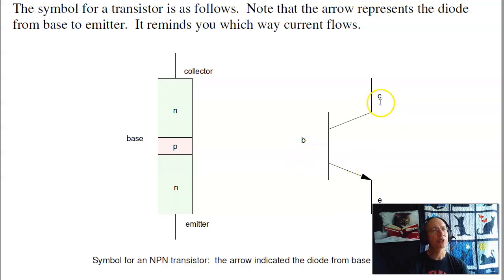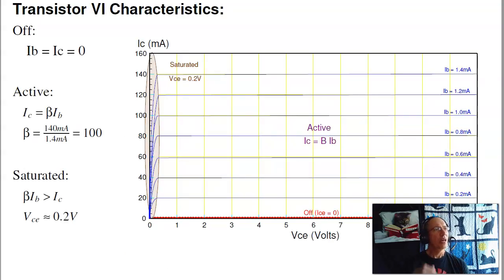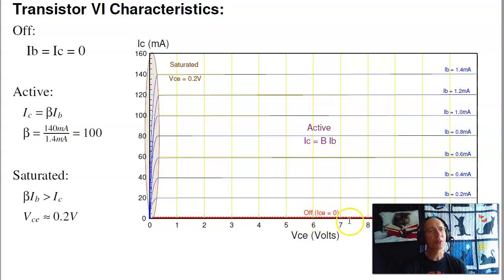The current base to emitter controls the current collector to emitter. For every hole flowing base to emitter, I have an electron flowing emitter to collector. But electrons are negatively charged, which means the current goes collector to emitter. The current base to emitter is in the same direction as collector to emitter. Moreover, the current collector to emitter is beta times the base to emitter. This is what the VI characteristics look like for a transistor. With three terminals, it's a more complicated graph. The base-to-emitter is a diode — if there is no current base to emitter, there is no current collector to emitter, because you have a reverse-biased PN junction.